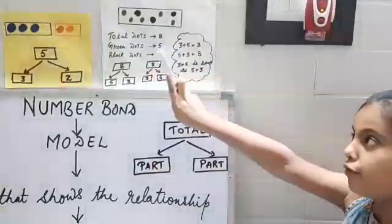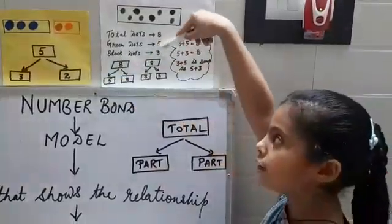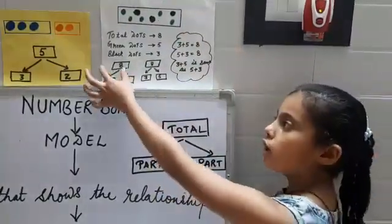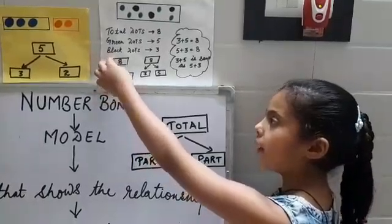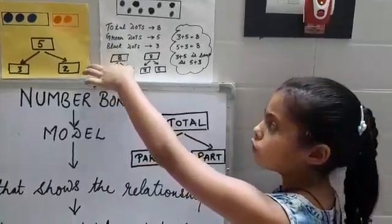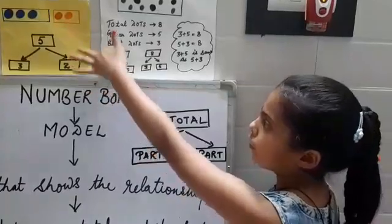Green dots are five. Black dots are three. The total number is eight, so we write it on the top. In the lower boxes, we write five and three.